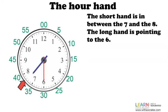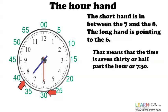Right now you can see the short hand is in between the seven and the eight and the long hand is pointing to the six. That means that the time is 7:30 or half past the hour or 7:30 with numbers.